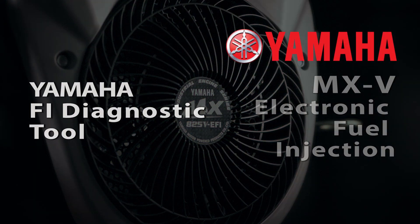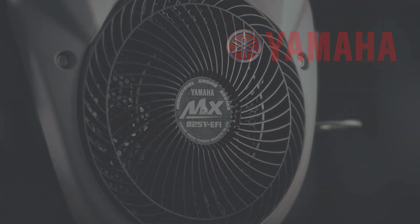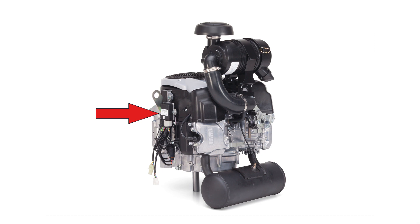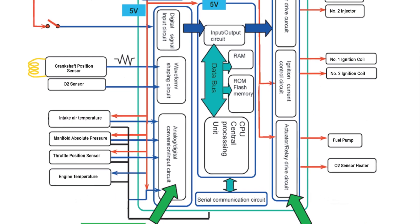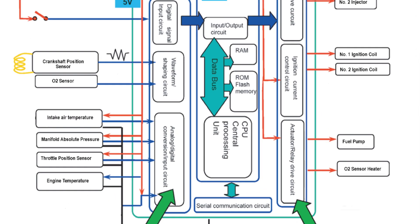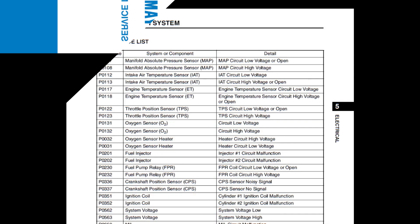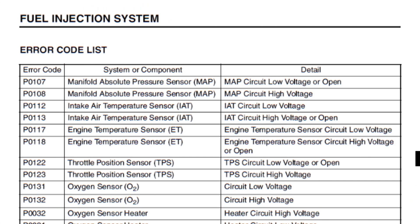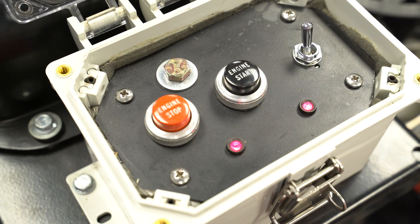This video will outline the operation of the Fuel Injection Self-Diagnostic System and the Fuel Injection Diagnostic Tool. The engine control unit contains self-diagnostic functions which continually check the FI system to determine if specific circuits are working within defined limits, and set an error code if the system detects a failure or abnormal signal. If the ECU detects a problem, an error code is recorded in the temporary memory of the ECU and the malfunction indicator lamp will come on.